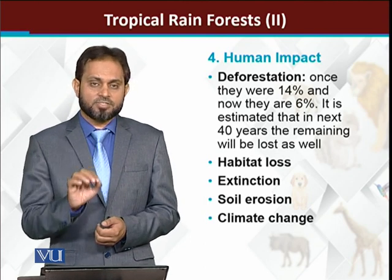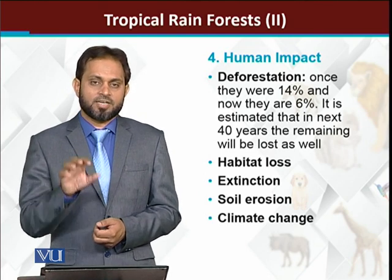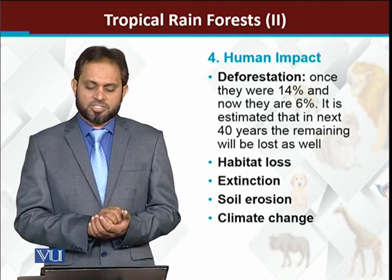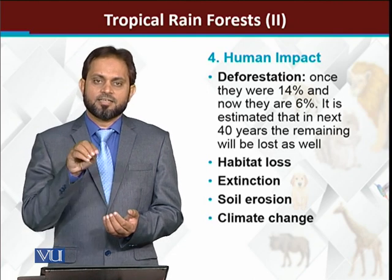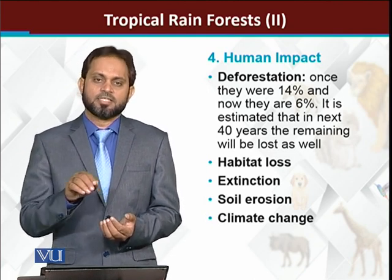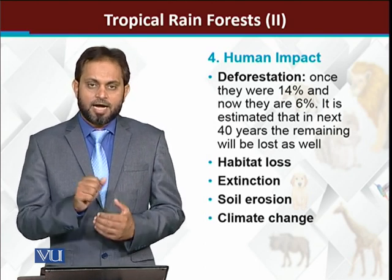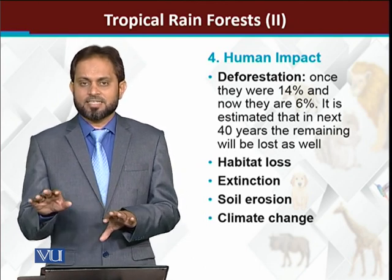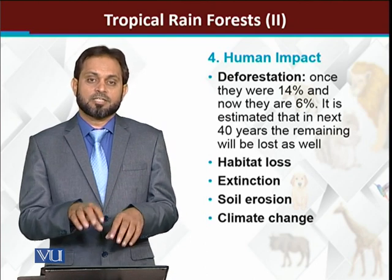The impact of this is that a large number of plants and animals will become extinct. Due to loss of habitat from deforestation, plants and animals are ultimately going extinct. Habitat loss and extinction of plant and animal species is a major consequence. Additionally, the soil of tropical rainforests, once cleared, is subjected to erosion.